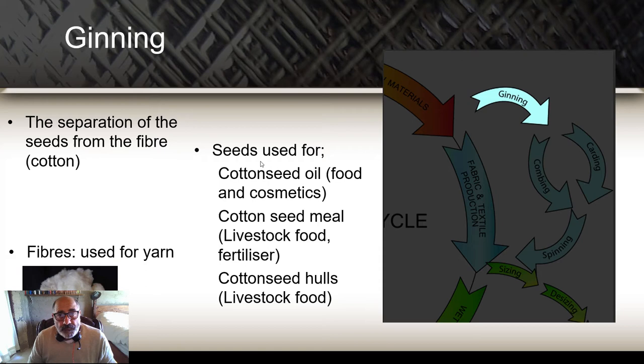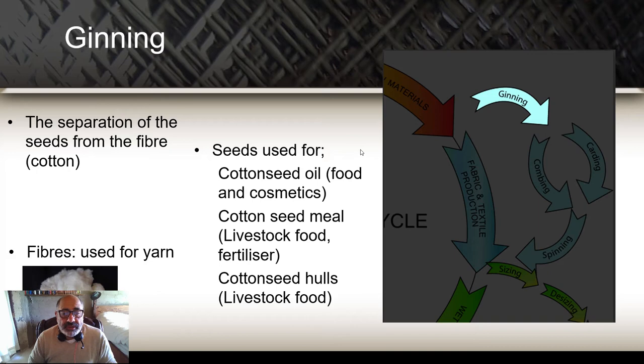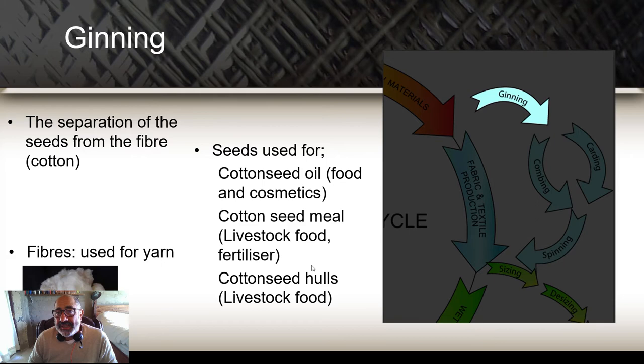The by-product — and that term itself, 'by-product,' meaning as if it's not important or of lesser importance, is perhaps a traditional term, and we should treat it more as another product. The seeds can be used for the creation of food and cosmetics, food for animal feed certainly, cotton seed meal, livestock food, and fertilizer. The hulls, the outside of the seed, can be used for food as well. So when we demand yarn, we're also creating the supply of food for animals and people, as well as cosmetics.